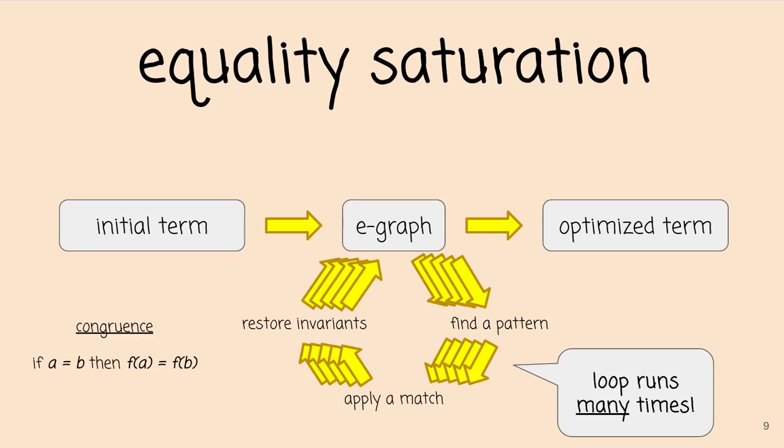And then it has to do some invariant restoration, the principal part of which is restoring congruence. And this is the hot loop of equality saturation. This runs a lot of times, and if you want to make equality saturation faster, you have to do something with this loop.